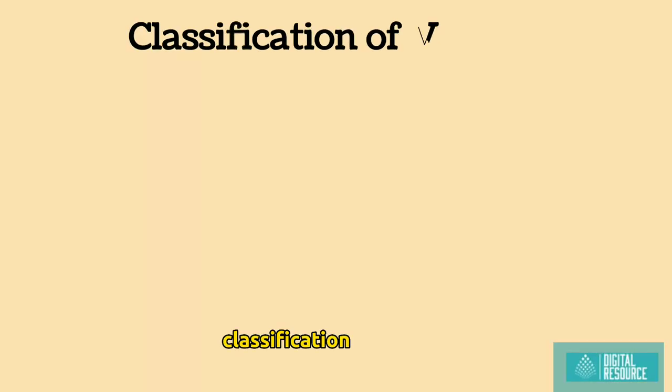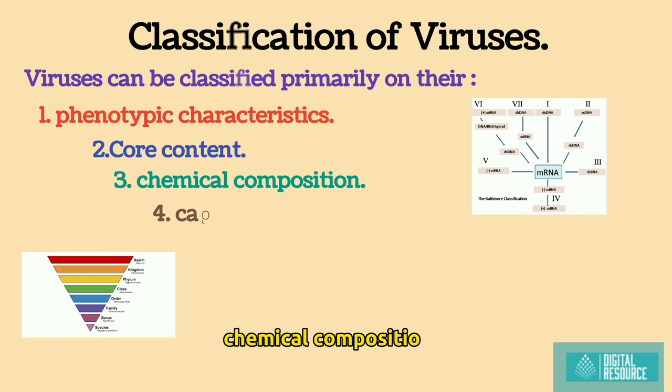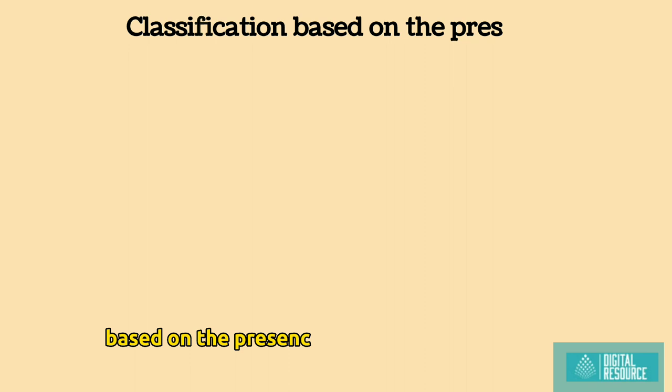Classification of viruses. Viruses can be classified primarily on the: 1. Phenotypic characteristics, 2. Core content, 3. Chemical composition, 4. Capsid structure, 5. Size and shape, 6. Modes of replication and other viral genome structures. Classification based on the presence of nucleic acid.